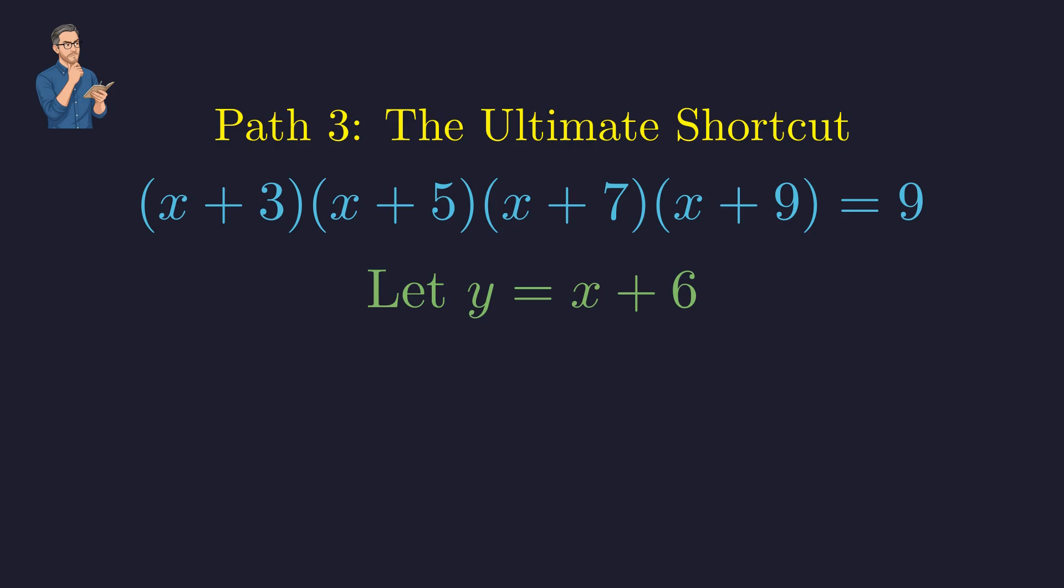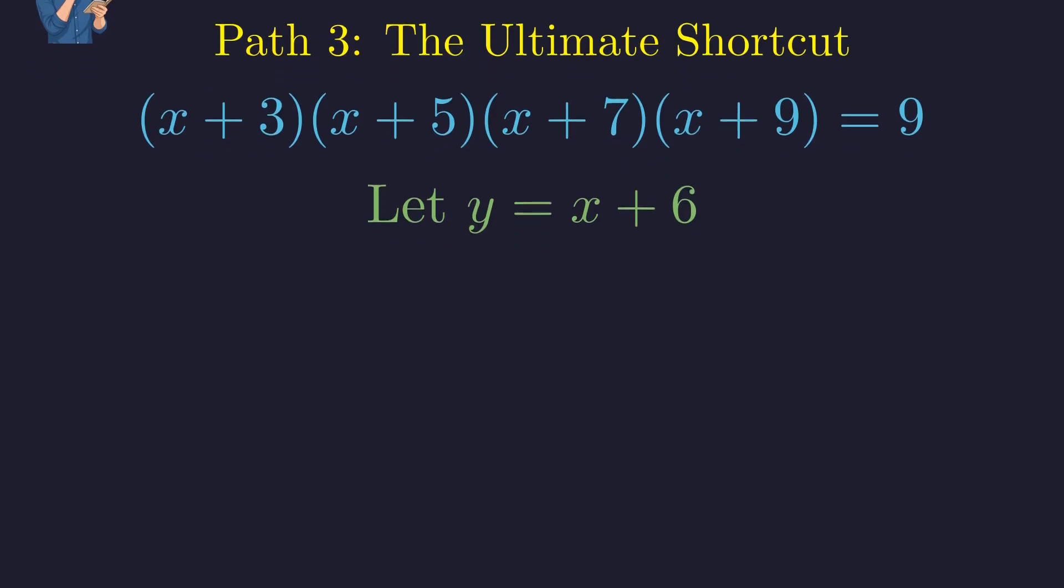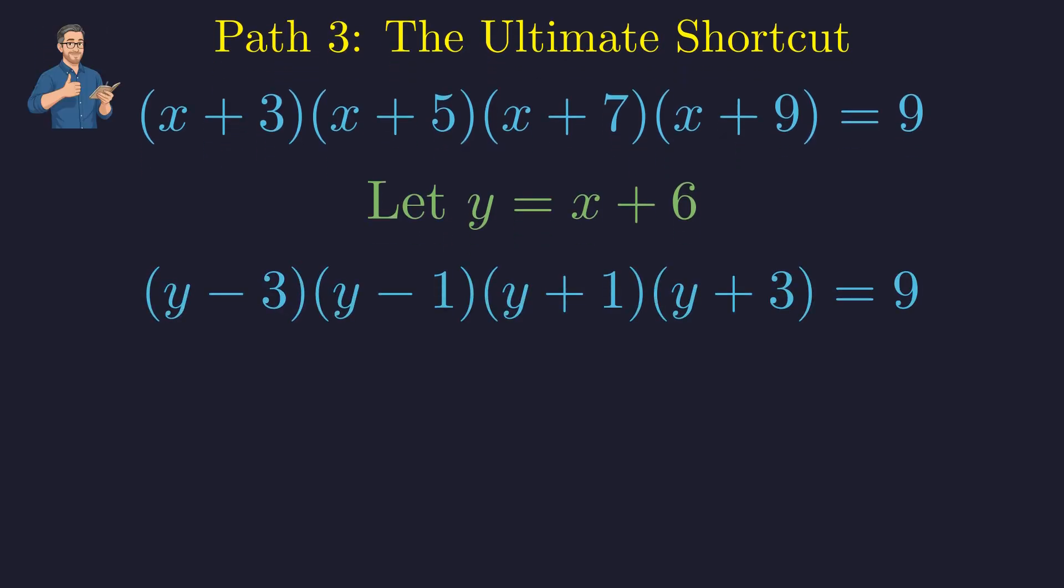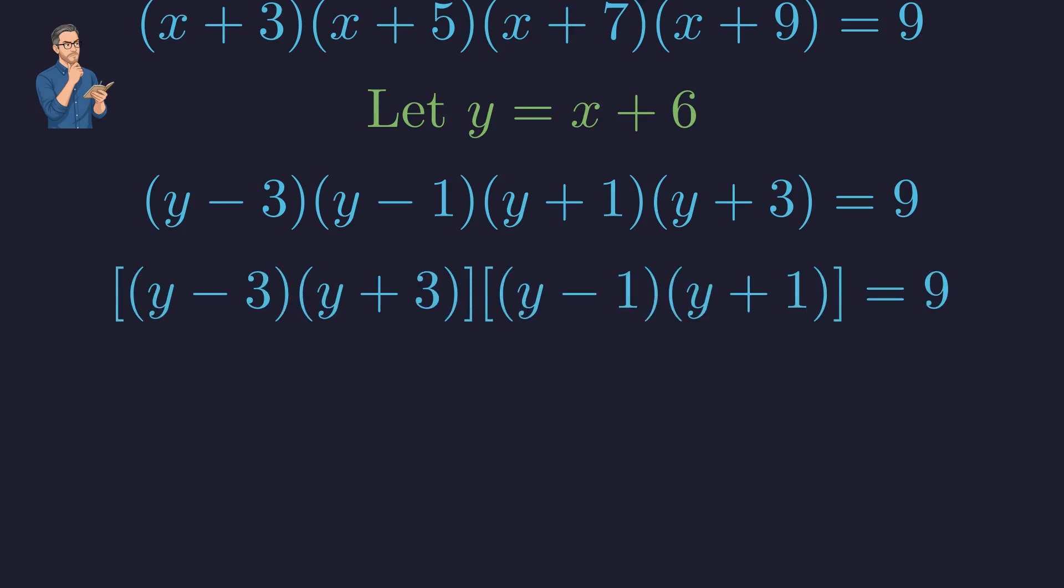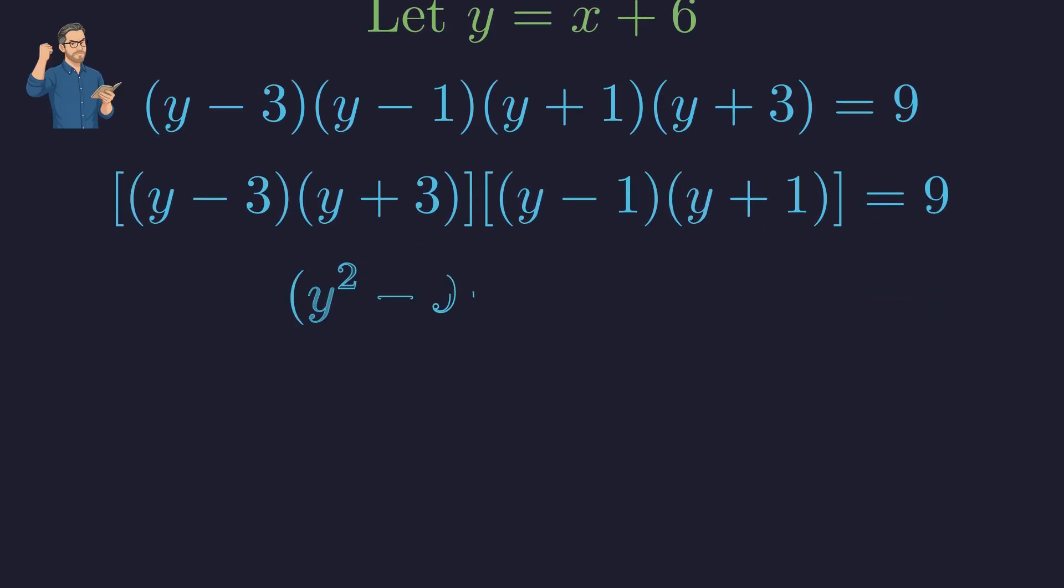This suggests a substitution centered at x = -6. Let's define y as x + 6. In terms of y, our factors become beautifully symmetric. We can reorder them to create two differences of squares. Expanding each pair gives us this simple form.